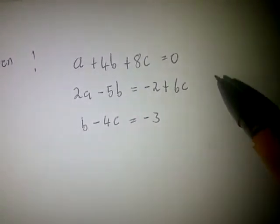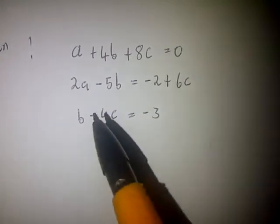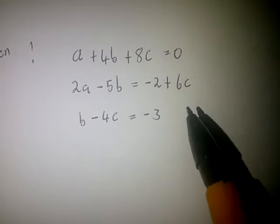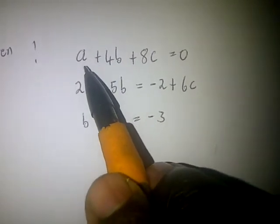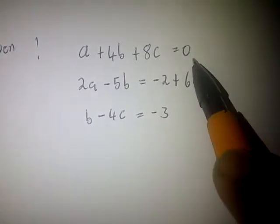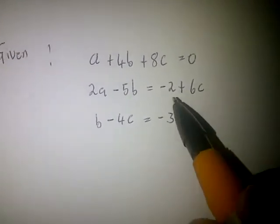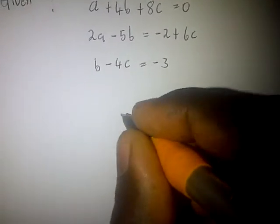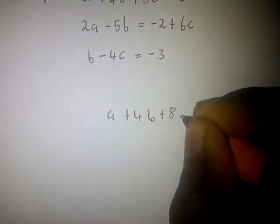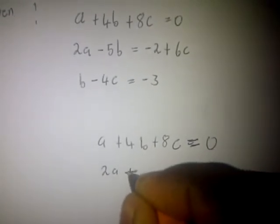If we are given an equation, say the first equation: a plus 4b plus 8c equals zero. The first thing we have to do in order to calculate the value of a, b, or c is to rearrange all the equations. The first equation is fine because it starts from a, then b, then c, then equals zero — the constant must be after the equal sign.